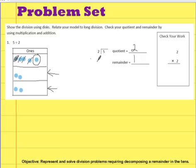So my quotient is going to be two, because I have two in each group. My remainder is going to be this one right here, so my remainder is one. So when we look at the division, the long division algorithm, we can see that five ones divided into two groups is two. Two ones times two is four. Five minus four is one. And that one is my remainder.